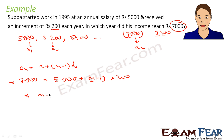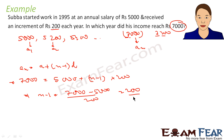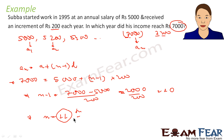We get n minus 1 equals (7,000 minus 5,000) divided by 200, that is 2,000 by 200, which is 10. So n minus 1 is 10 and n is equal to 11. On the 11th year her salary is 7,000, and that is my answer.